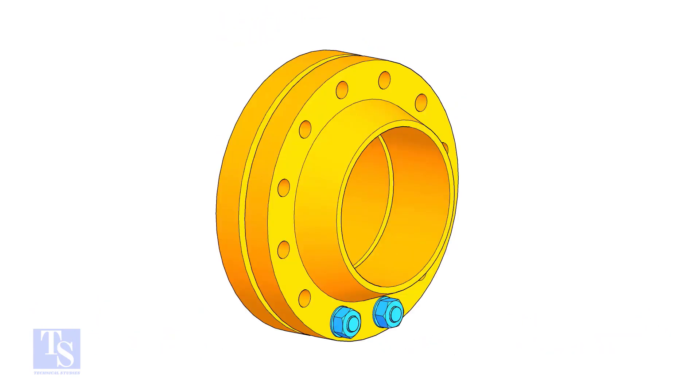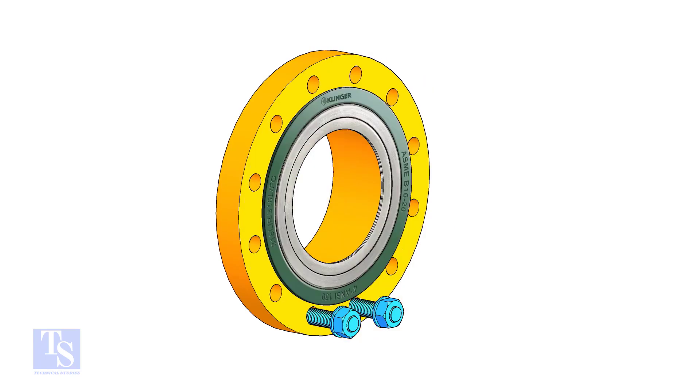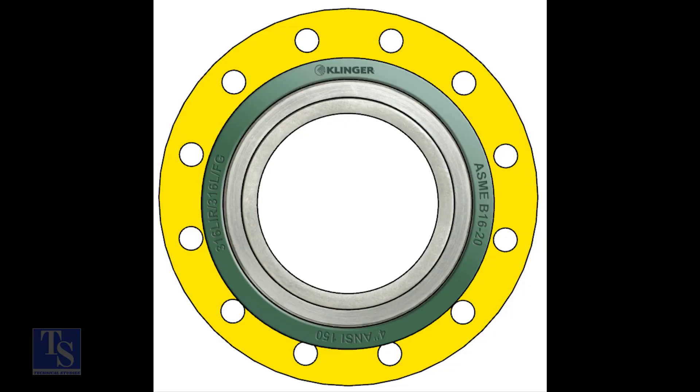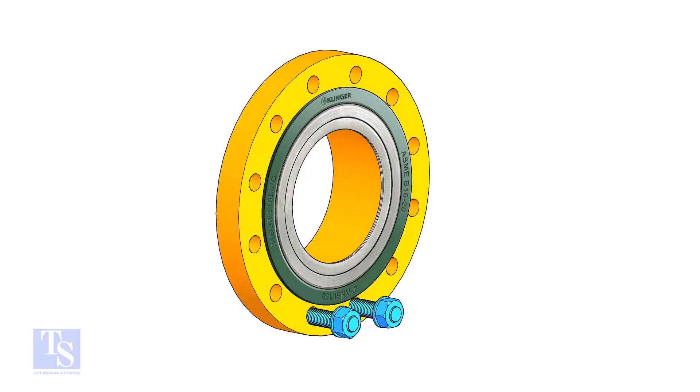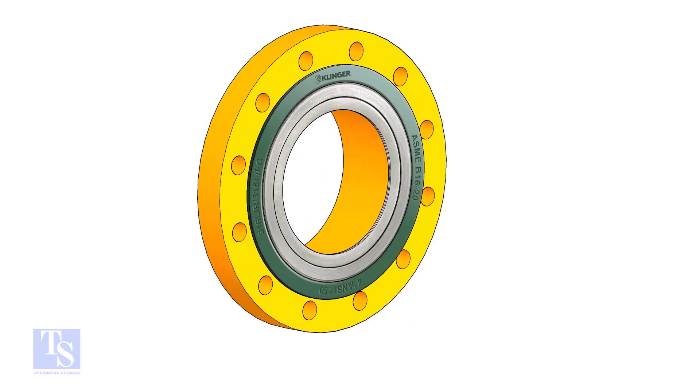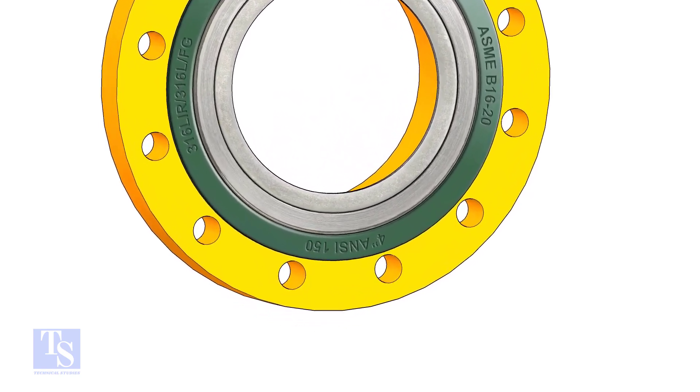Put two bolts in the adjacent bottom side holes. Put the gasket between the flanges. Now the gasket sits eccentrically between the flanges. We need the gasket to sit exactly in the center of the flanges.